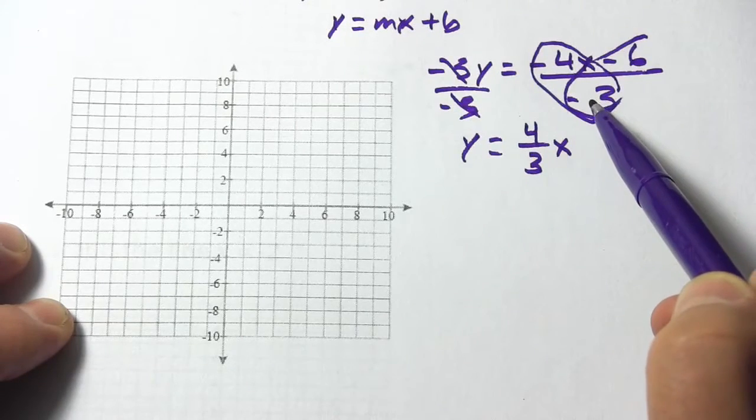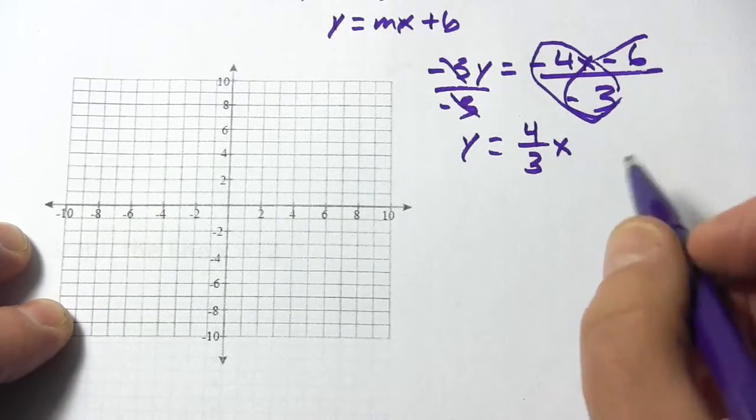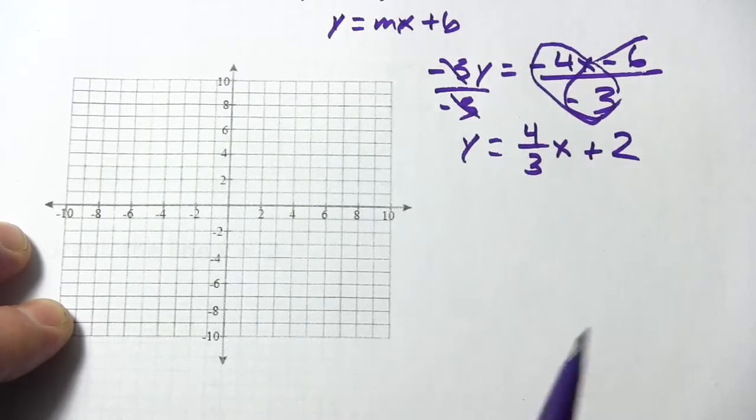And then negative 6 divided by negative 3. Again, that's going to be a positive. 6 divided by 3 is 2. So we get plus 2.